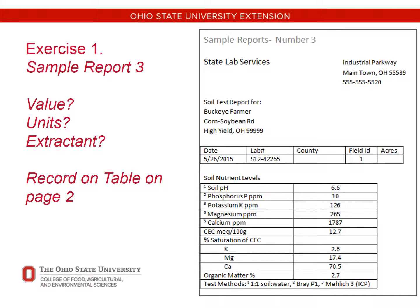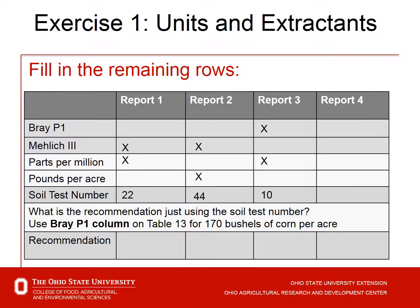Here is number 3 in the lower left-hand corner of page 2. The phosphorus value reported is 10. The units are parts per million. We don't immediately see the extractant listed, but if we look at footnote 2 below, we find that this is a Bray P1 test. So we fill in the table: Bray P1, parts per million, value of 10.